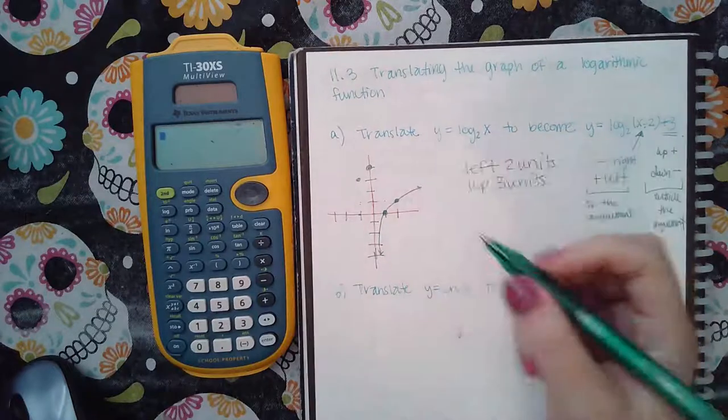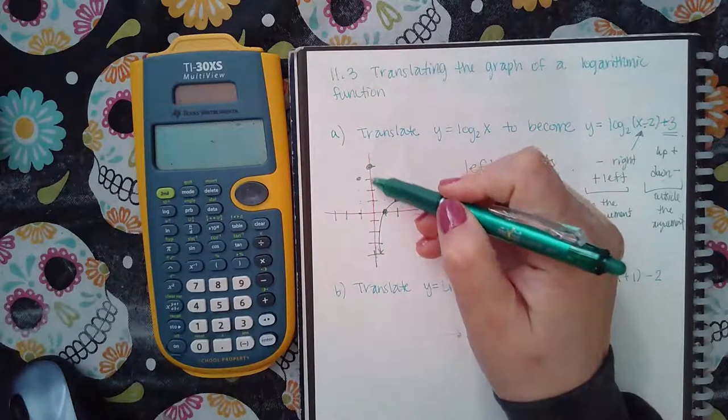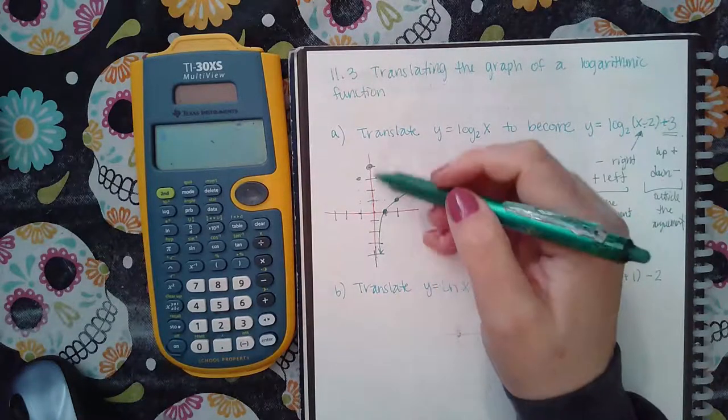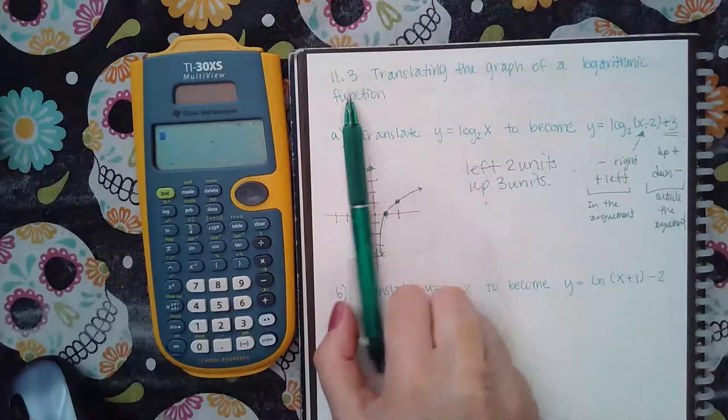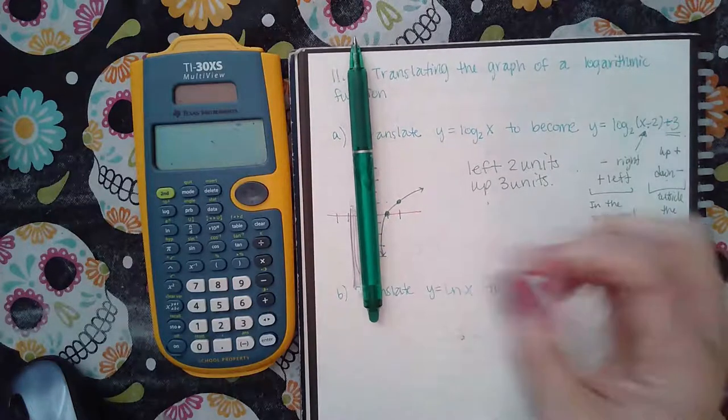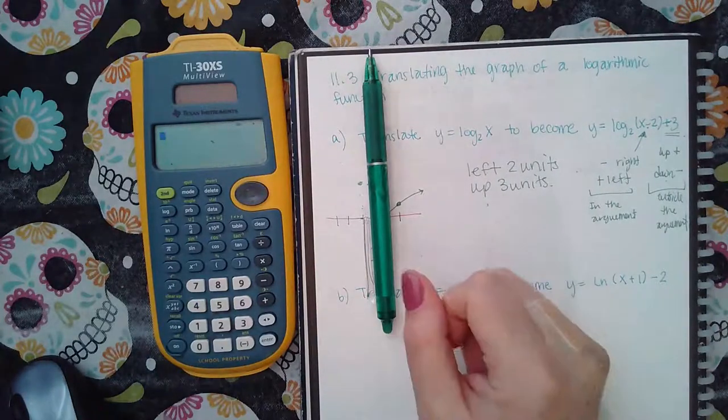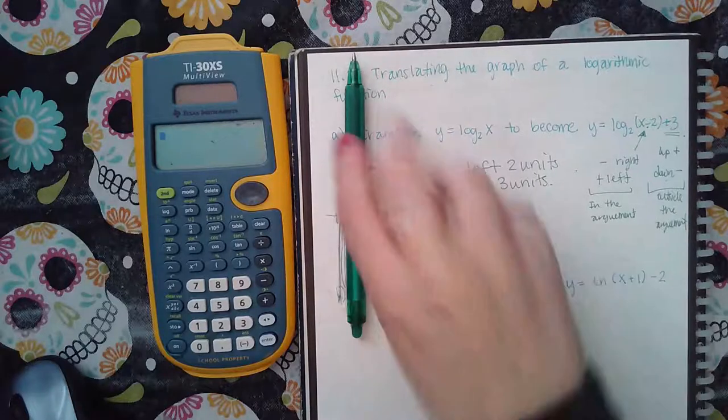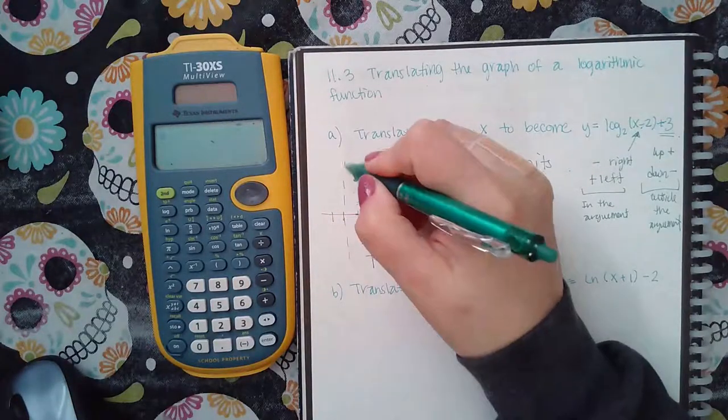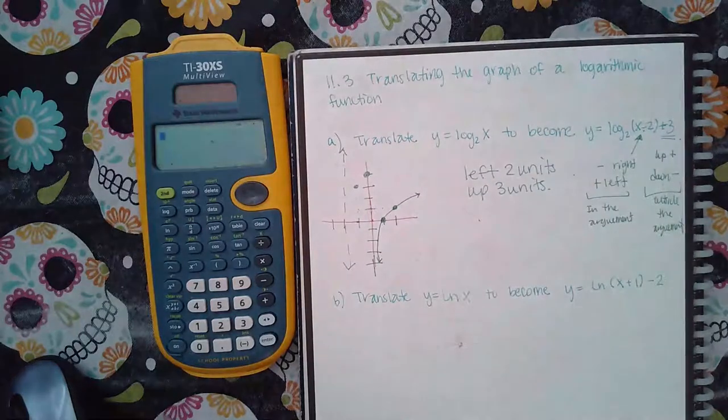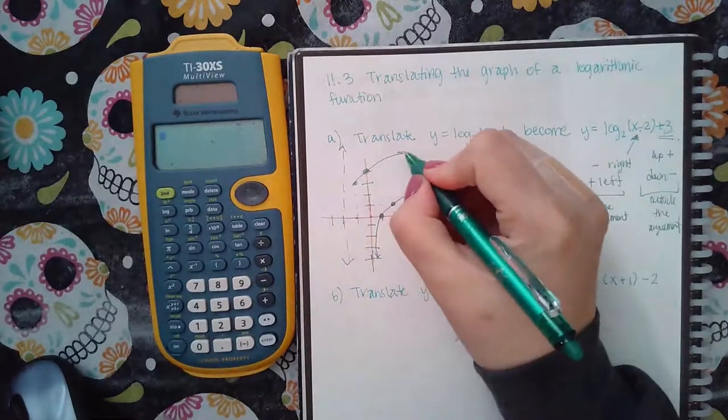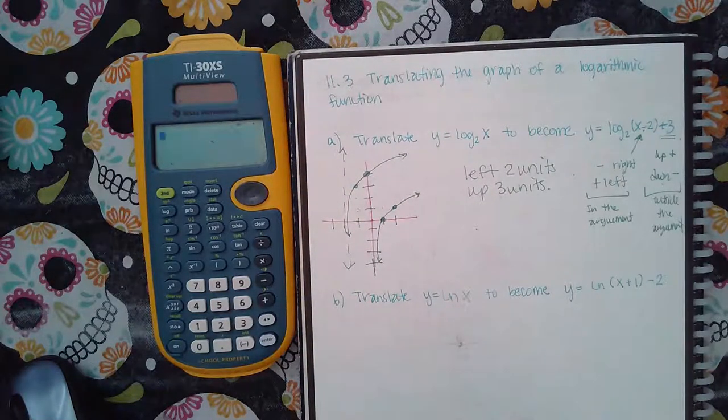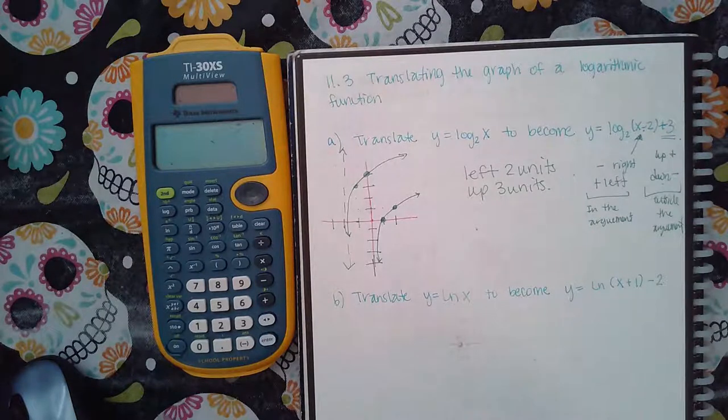And then logarithms also have a vertical asymptote which is on the y-axis. If it moves up or down it's not really going to do anything. If you move it to the right two now you have a vertical asymptote at the value positive two. And then if I draw this it'll be here.